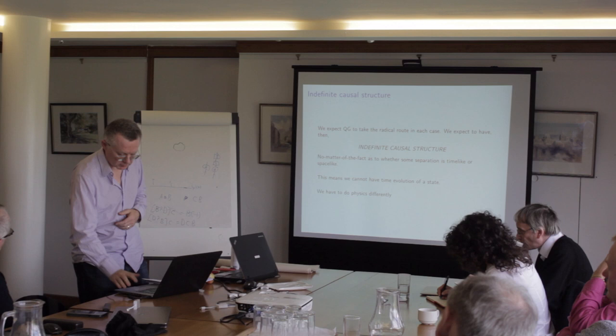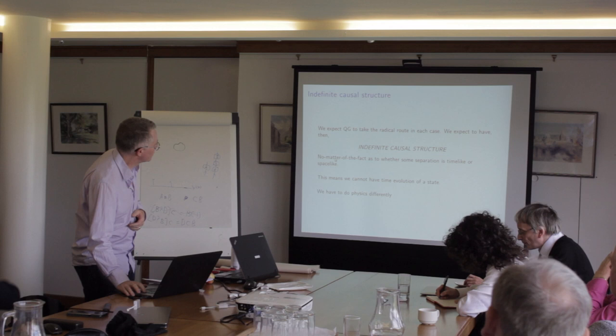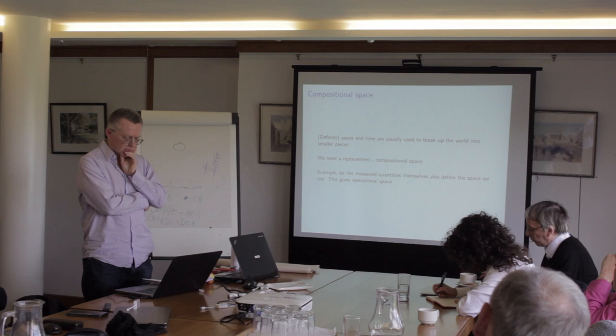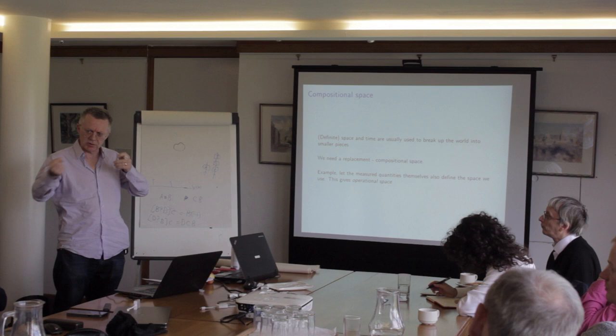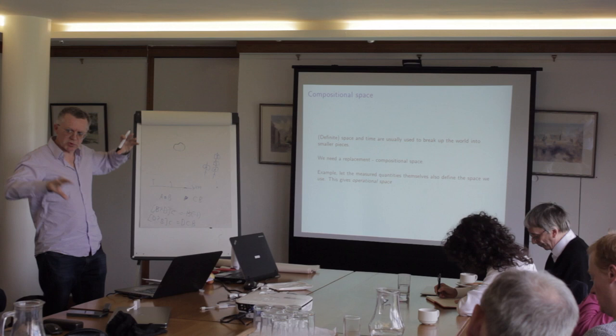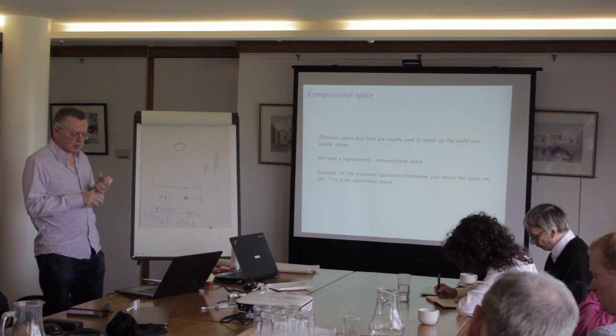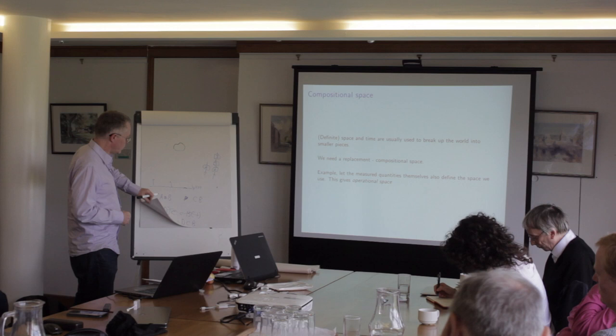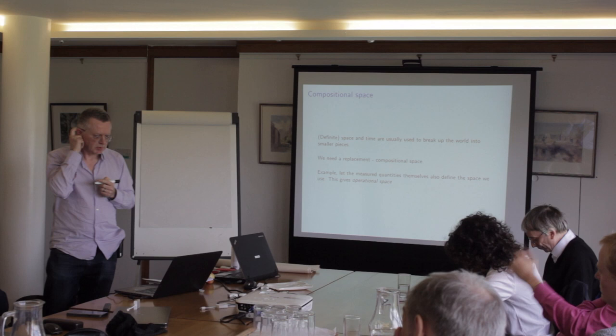It seems an interesting challenge to try to find a way to do physics where you don't have definite causal structure, because we're so reliant on this concept of evolving a state in time. And indeed you can do physics without relying on definite causal structure. So if one is going to do physics without definite causal structure, how do we proceed? If you have no notion of how to separate stuff that's happening, then essentially everything is just happening at one point and you can't really do physics. You need some way to address different bits of the world. Typically we use space and time in a standard sense, with definite space and definite time.